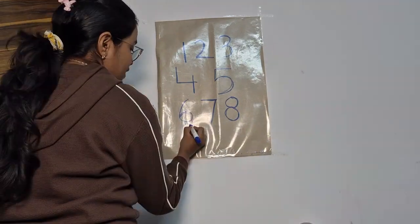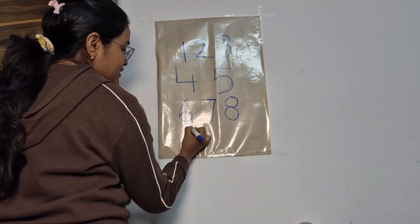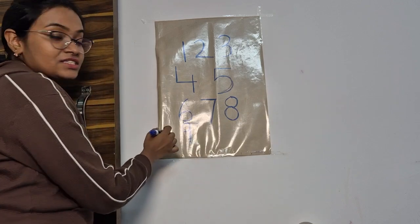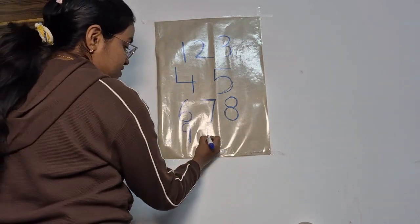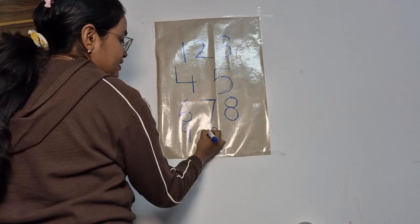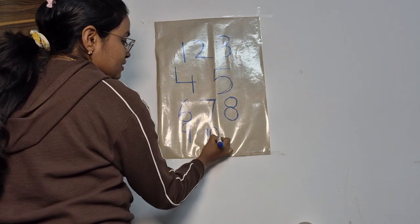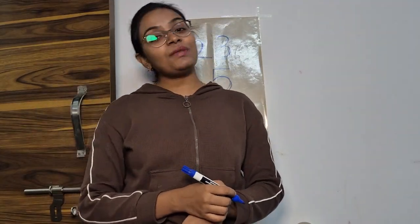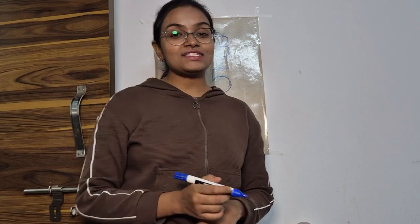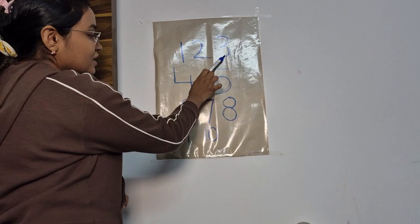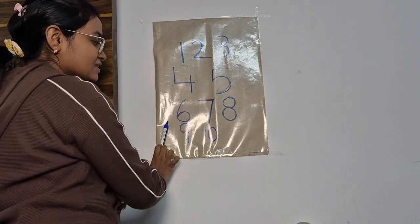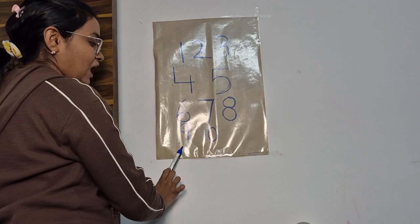Now nine. One circle, standing line makes the number nine. Standing line, circle makes the number ten. Okay children, now this is our number one, two, three, four, five, six, seven, eight, nine, ten.